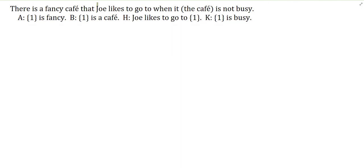Let's take a look at another question. There is a fancy cafe that Joe likes to go to when the cafe is not busy. We need to isolate the subject or group and figure out the property. We're talking about a fancy cafe and the property is Joe likes to go to it when it is not busy. Because it says there is a fancy cafe, this is an existential.